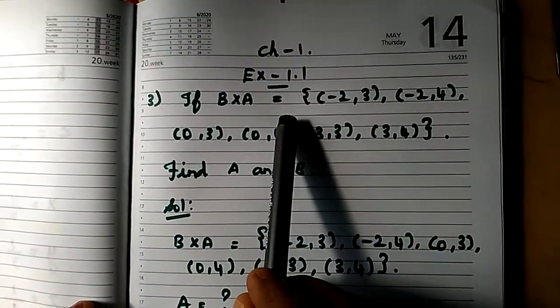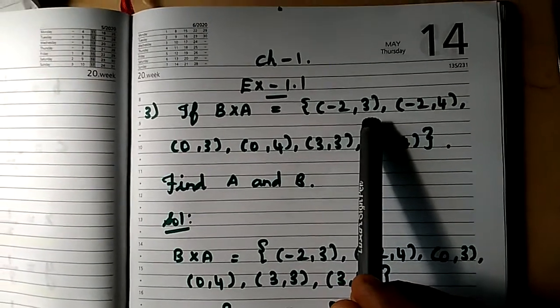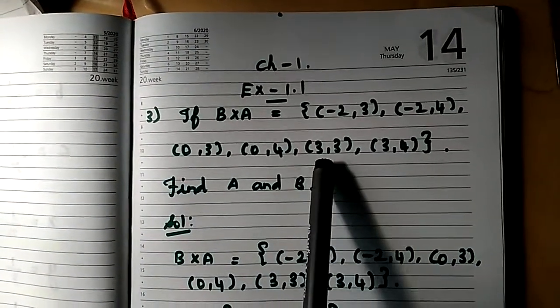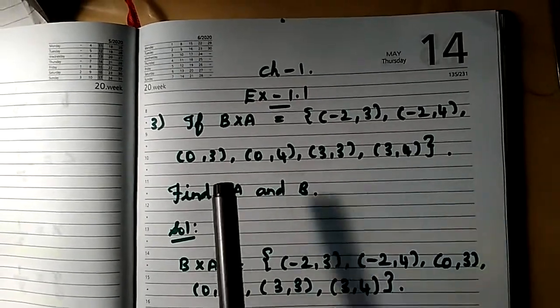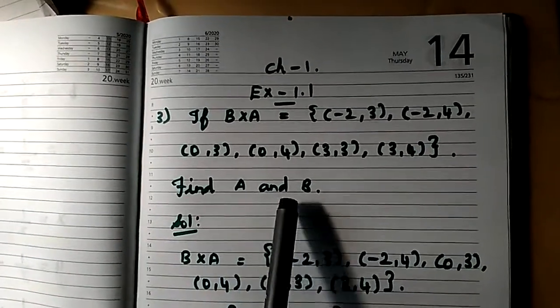If B cross A equal to set of minus 2,3, minus 2,4, 0,3, 0,4, 3,3 and 3,4. So what will be the question? Find A and B.